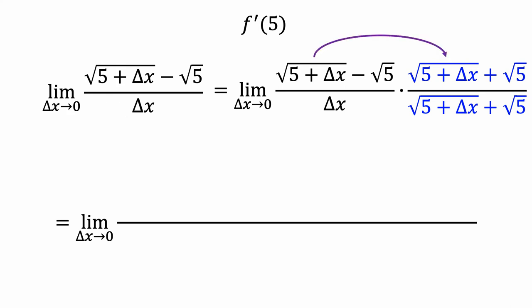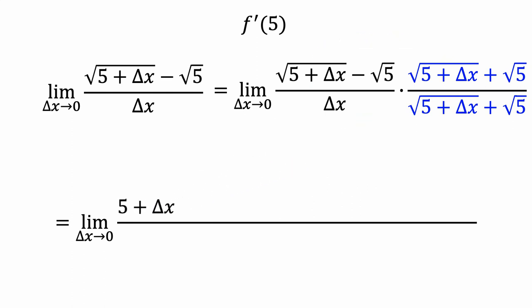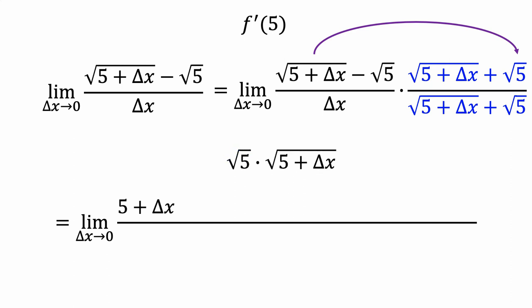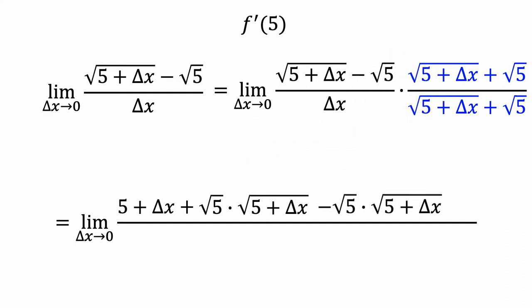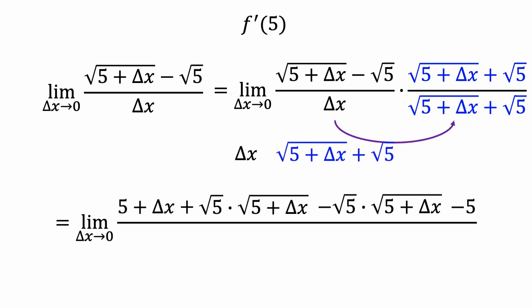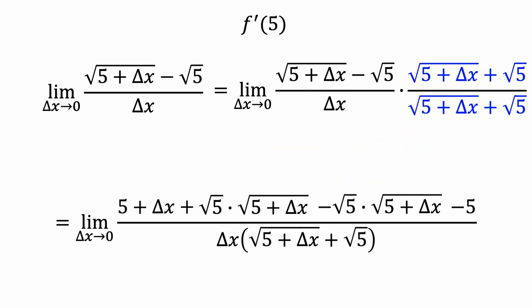Let's give ourselves some room to actually multiply these fractions. When we multiply the first terms in the numerators, we're multiplying a square root by itself, so this will be equivalent to just 5 plus delta x. When we multiply the first term in the first fraction with the second term in the second fraction, we're multiplying root 5 times root 5 plus delta x — there isn't a way to simplify this, so we'll just add it below. The next term is the same thing but subtracted. When we multiply the second terms, we have negative root 5 times root 5, which is equal to negative 5. Finally, we multiply the denominators.